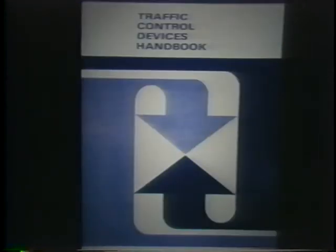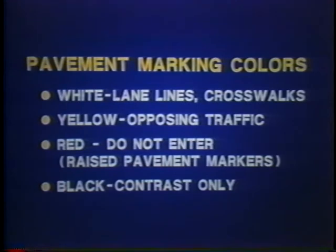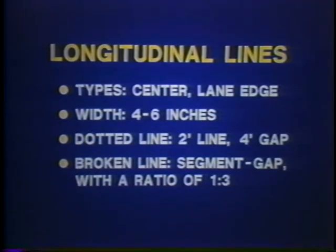The Traffic Control Devices Handbook, the companion document to the MUTCD, gives implementation guidelines. Pavement markings, raised pavement markings, post-mounted delineated markers, object markers, and various special devices are all considered to be marking and delineation. Like signs, pavement marking colors have standards — each color conveys a special meaning. White pavement markings are used to delineate separation of traffic lanes where all traffic is flowing in the same direction, and crosswalks. Yellow pavement markings separate traffic flowing in opposite directions. Red pavement markings are prohibitors. The center line and edge lines are longitudinal lines, with a standard width of four to six inches.